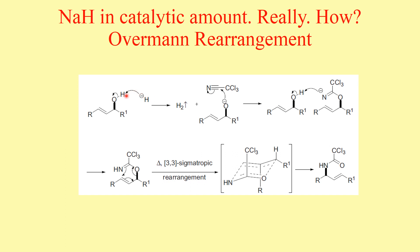In the first step, a catalytic amount of sodium hydride is used. The hydride from sodium hydride abstracts this hydrogen to generate the alkoxide anion. This alkoxide ion then attacks trichloroacetonitrile, and what it gives us is this particular intermediate.